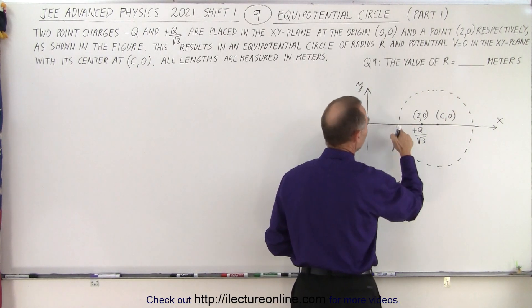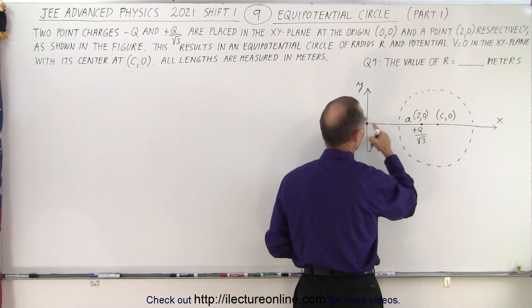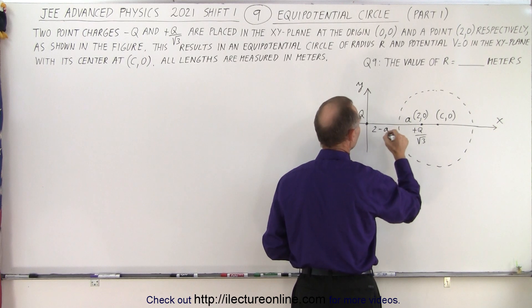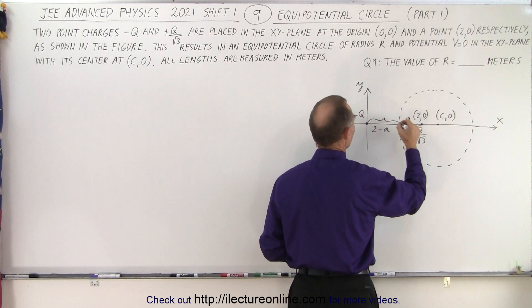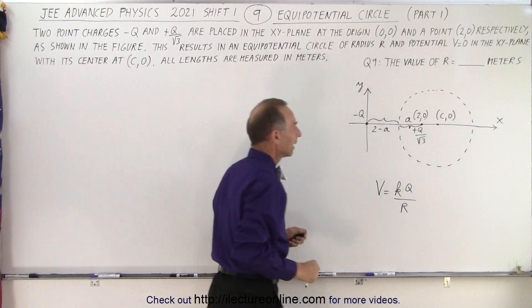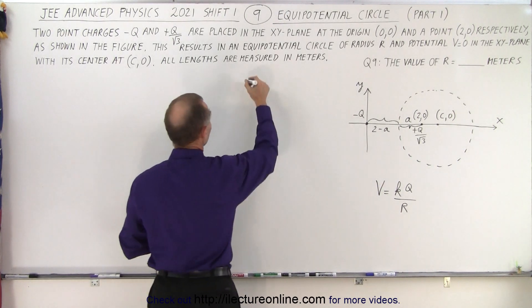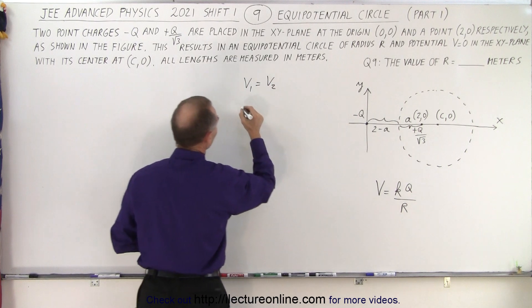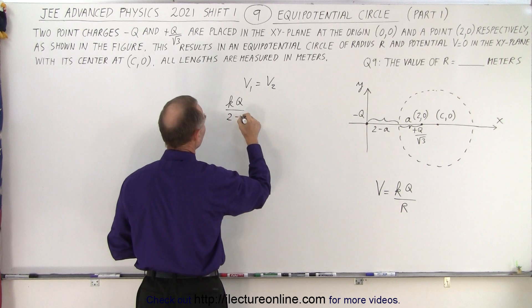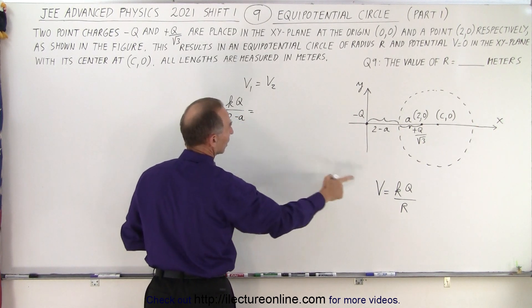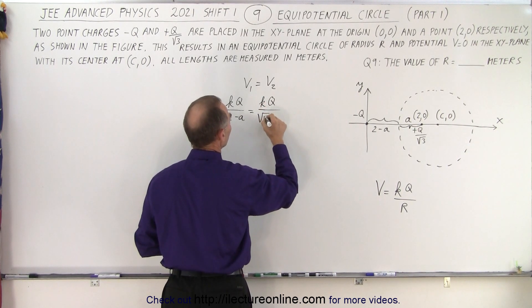If we call the distance from the edge of the circle to the point where the first charge is A, then the distance from there to the second charge would be 2 minus A, since the total distance between the charges is 2. So we have distance A here and 2 minus A there. We can then set those potentials equal: V1 equals V2, which gives us K times Q divided by (2 minus A) equal to K times Q divided by the square root of 3 times A.